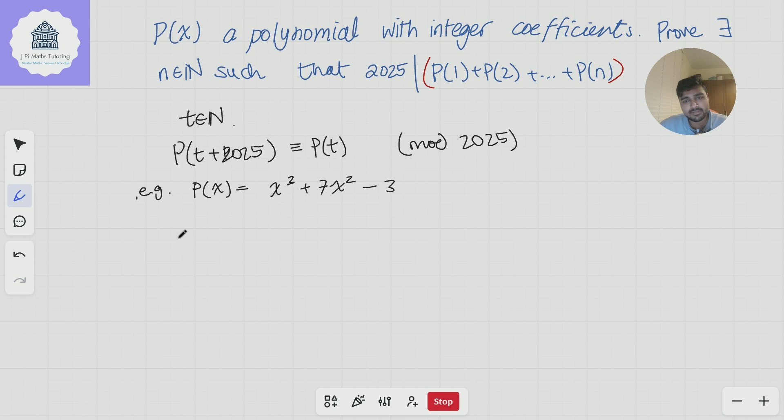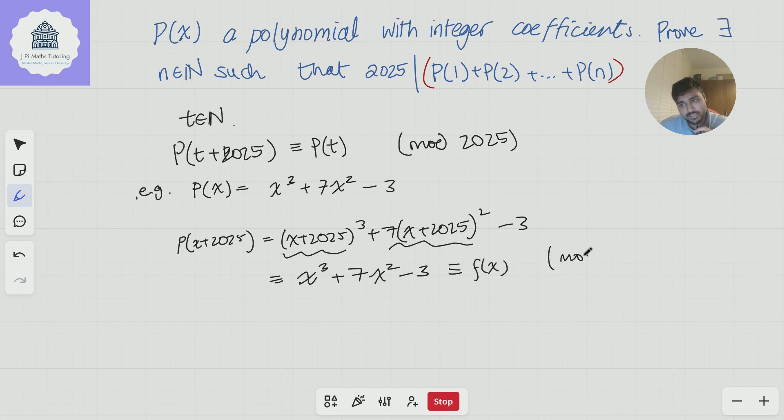The idea here is if I now add 2025 to this, x plus 2025, this is x plus 2025 cubed plus 7 times x plus 2025 squared minus 3. But obviously, if I look at this mod 2025, if you've seen modular arithmetic before, this should be pretty clear. If not, imagine I expand all these terms. A bunch of them are going to have 2025 and thus be multiples of 2025. The only terms that won't will be x cubed, 7x squared, and the minus 3. And so this is all mod 2025.